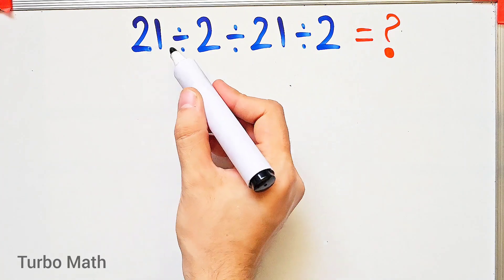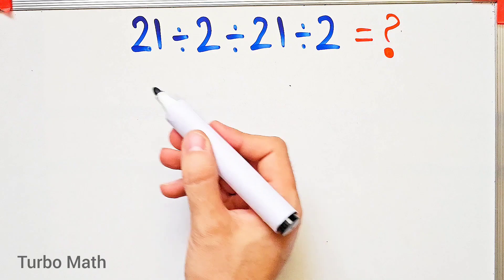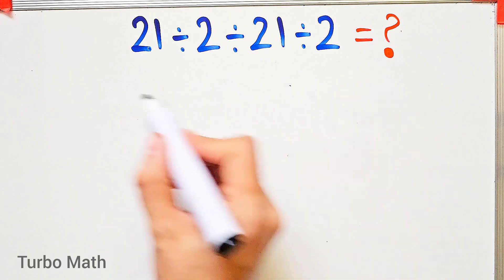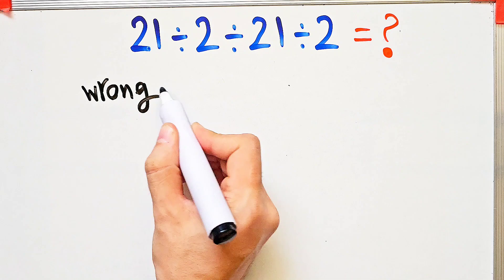21 divided by 2, then divided by 21, then divided by 2. What is the answer to this question? Can you solve it? Hi friends and welcome to Turbo Math channel. In the wrong way of solving this question, some people solve this question like this: